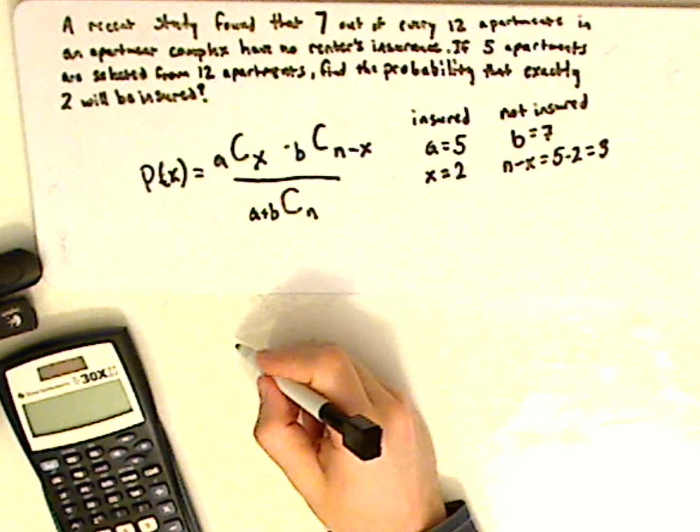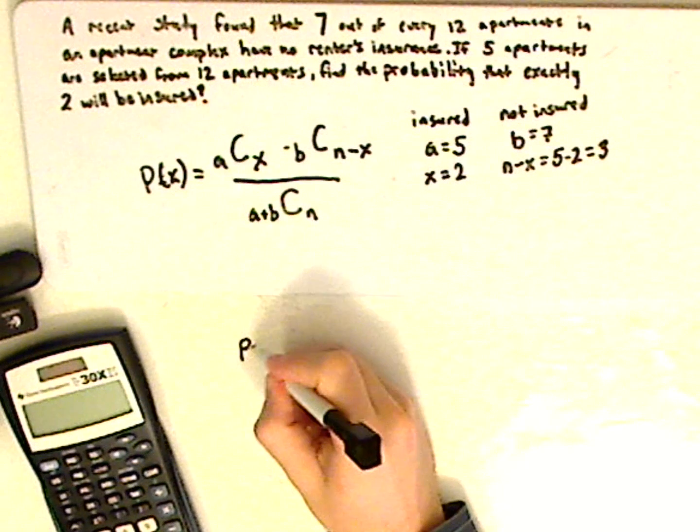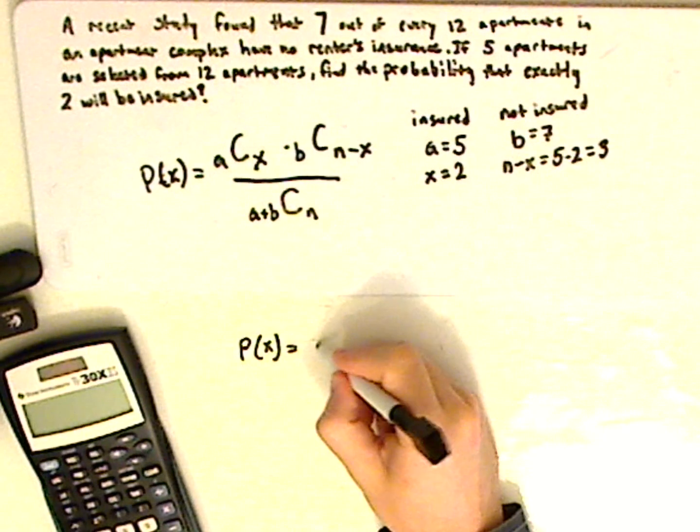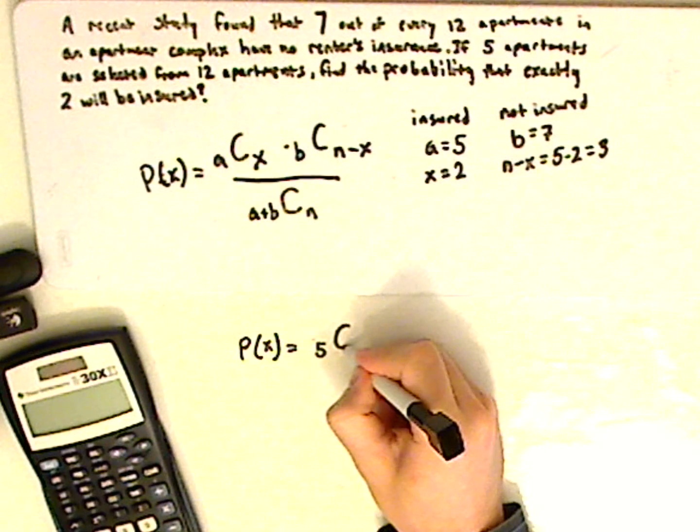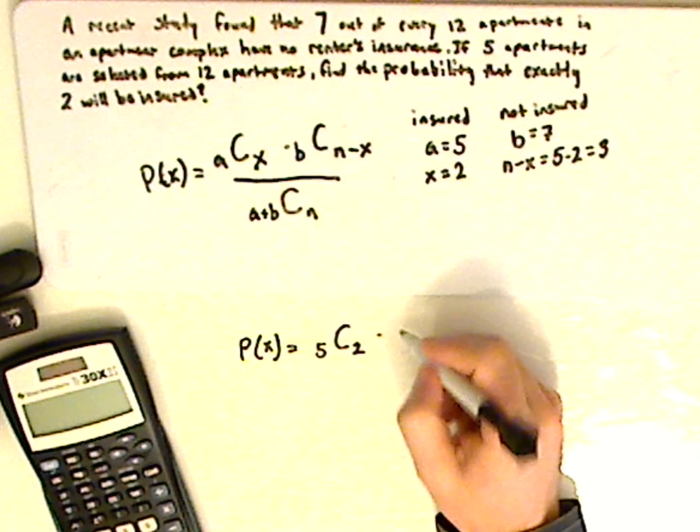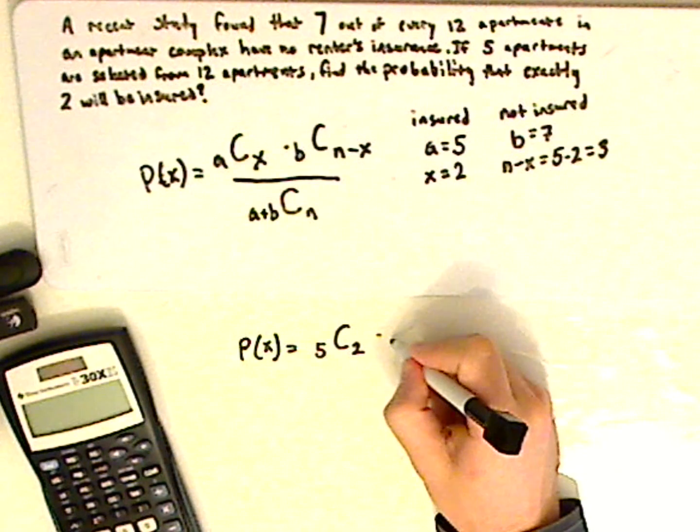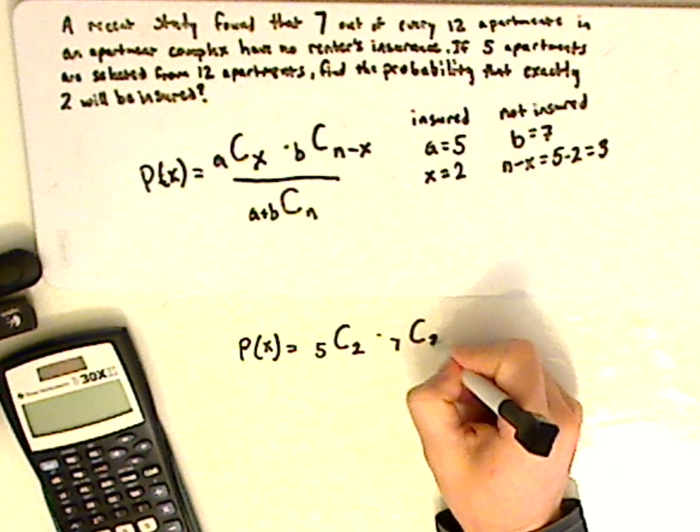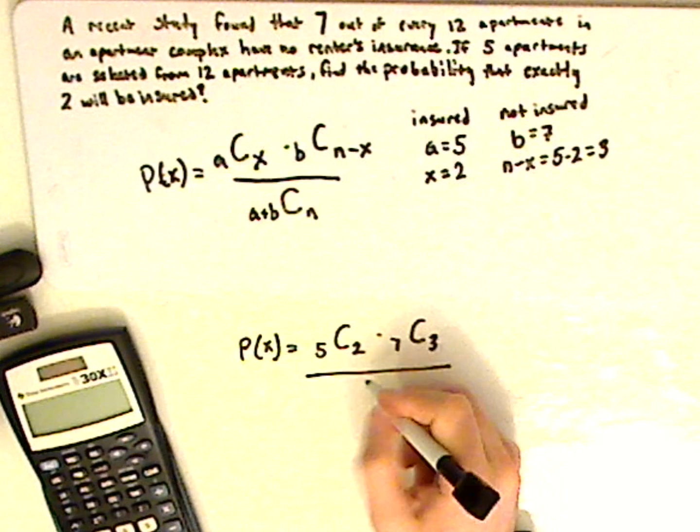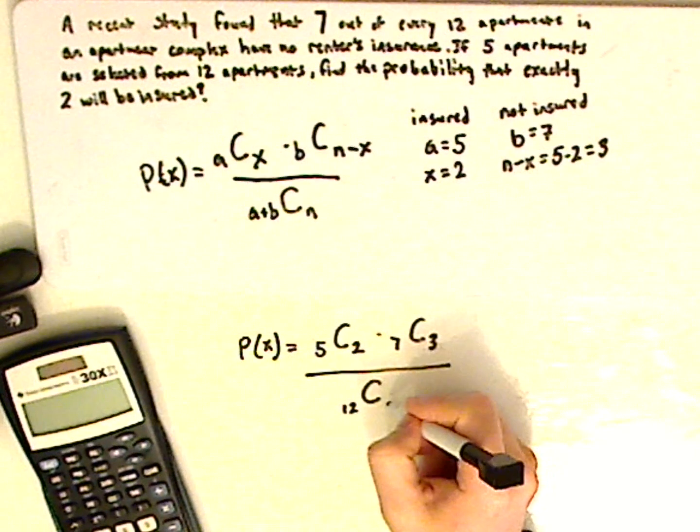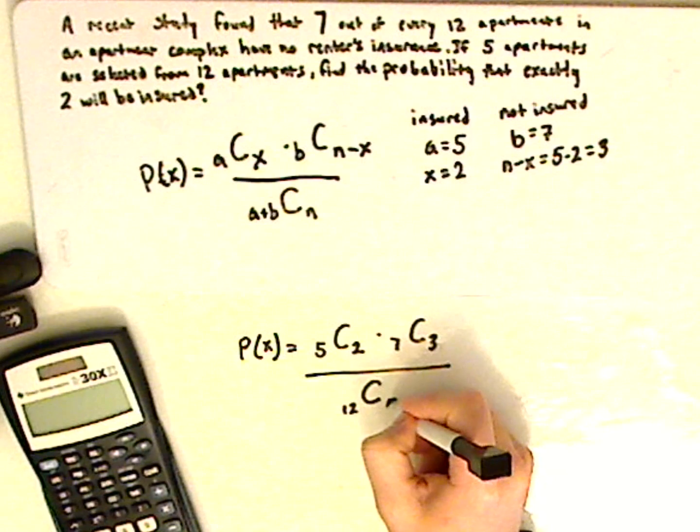And so then you just plug all those in. So you have P of X equals 5 combinations 2 times 7 combinations 3 over 12, and you're choosing 5.